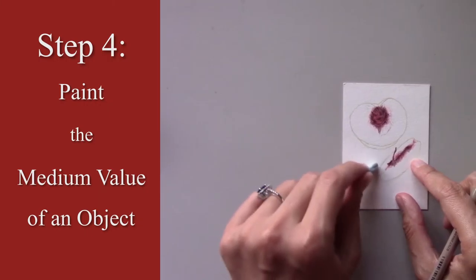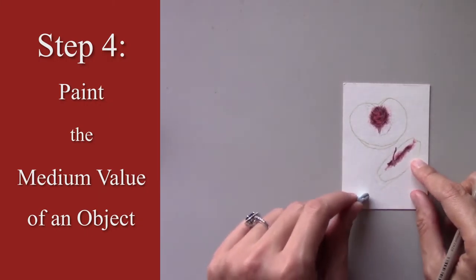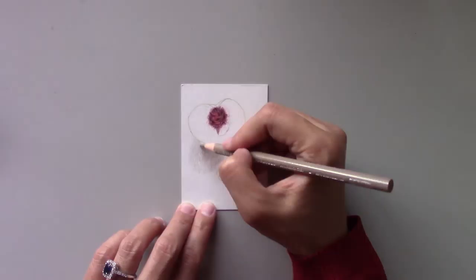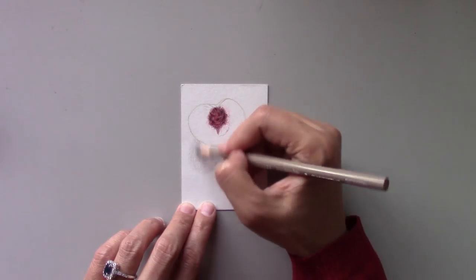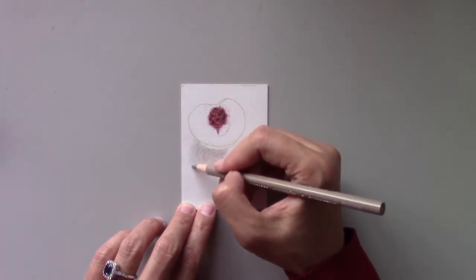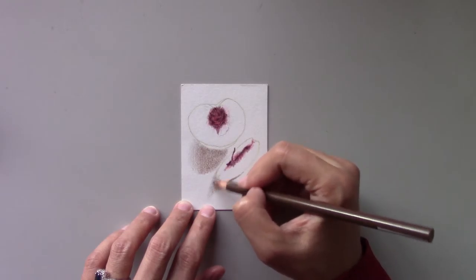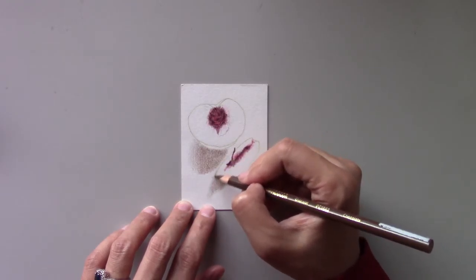Before I begin with the shadow, I erase the pencil line slightly with putty. Then I start layering the first wash with French grey 50% using light pressure. Next, for a second wash, layer with chocolate using light pressure.